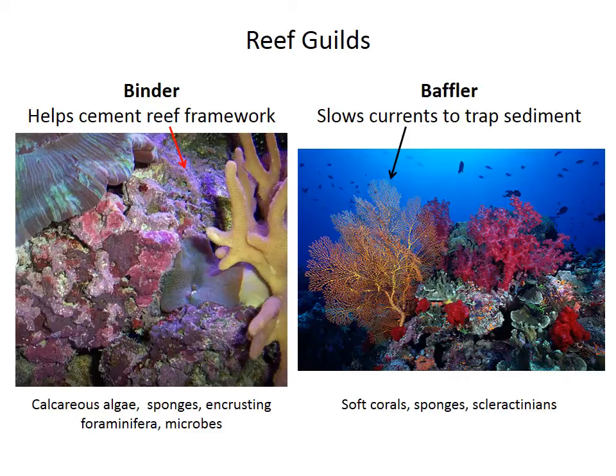and sometimes sponges. They are organisms that will grow as almost a coating over the reef surface that helps stick everything together, binding the sediment and other reef components together.